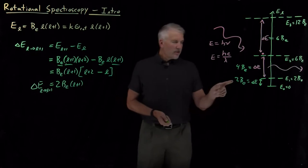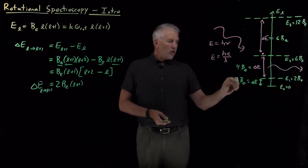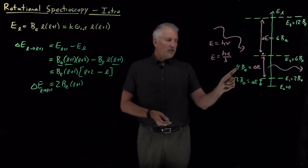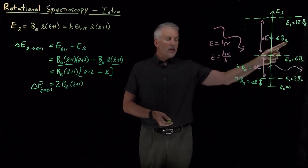So it's no coincidence that these gaps were going up as even numbers: twice the rotational constant, four times the rotational constant, six times the rotational constant.